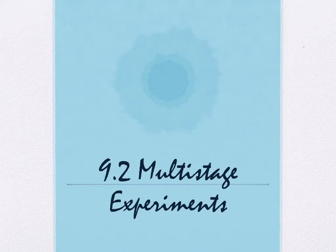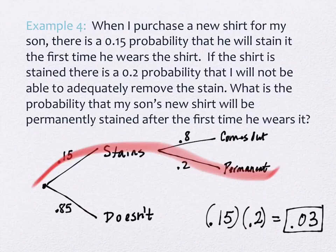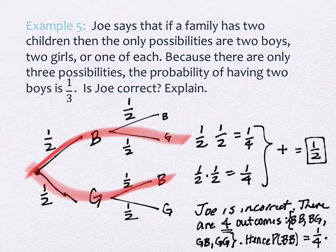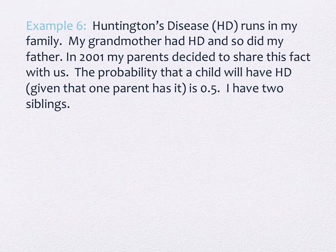Last time we met, we started talking about multi-stage experiments — compound experiments where two separate outcome options happen. The example we had done was about two children being born to a family. Because of the ordering of birth, there are actually four outcomes, not three, so it's a one-fourth probability — not one-third — of having two boys.